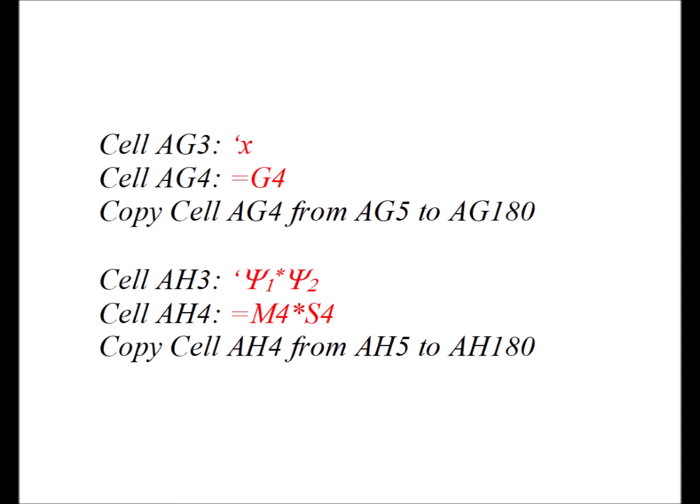In cell AH3, we have the label psi1 star psi2 — that is, the integral of psi1 star psi2. Cell AH4 is equal to M4 times S4, and then we copy the cell AH4 from AH5 to AH180.